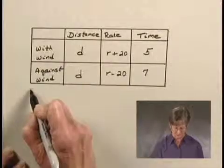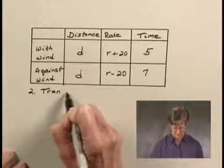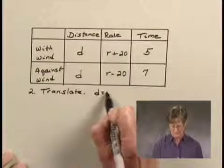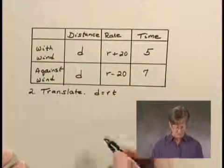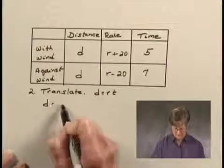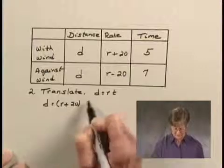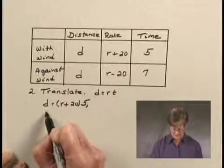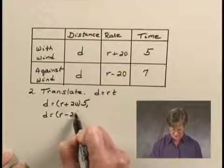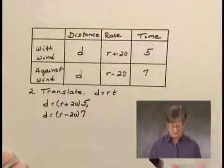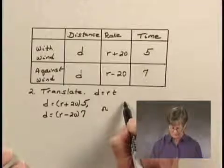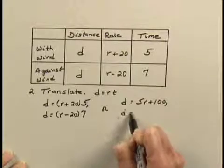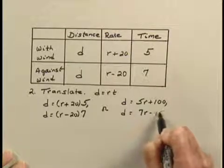Now let's use the information in this table to translate to a system of equations, using the formula distance equals rate times time for each row. From the first row: D equals R plus 20 times 5. From the second row: D equals R minus 20 times 7. Expanding, we get D equals 5R plus 100 and D equals 7R minus 140.